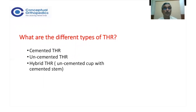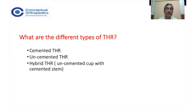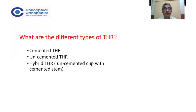At the moment, the preferred option is uncemented total hip arthroplasty. There is another entity called hybrid total hip arthroplasty — hybrid in the sense that on one side you do one type of arthroplasty and on the other side, another. On the acetabular side you do an uncemented cup, and it has been found that cemented cups loosen out much earlier than uncemented cups.